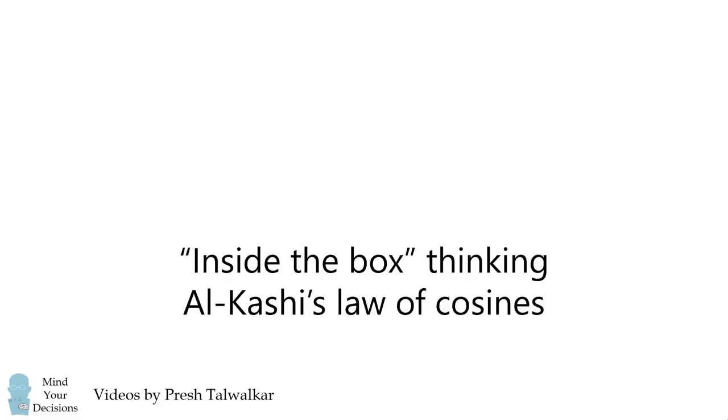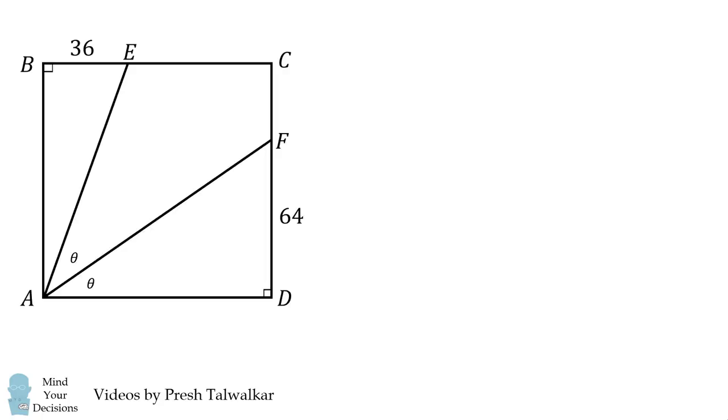Now, there's a final way to solve this problem, using Al-Kashi's law of cosines. I'm going to present this method because it's the way that I solved the problem. So first, we'll go ahead and label the diagram with a side length of X. This means EC will be equal to X minus 36, and CF will be equal to X minus 64. Now, construct EF and examine triangle AEF. We'll use Al-Kashi's law of cosines on the side opposite the angle theta. That'll be EF.